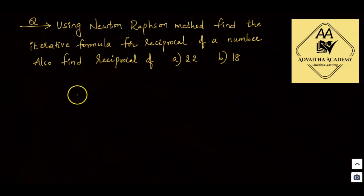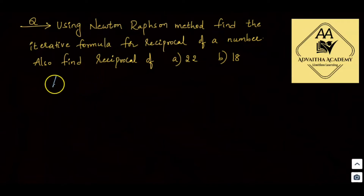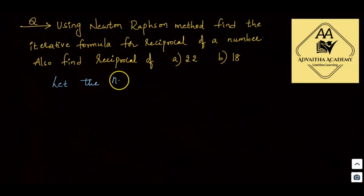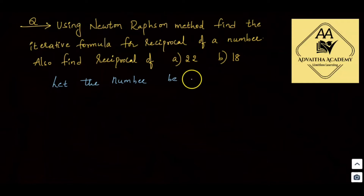First, we will derive the iterative formula. Let the number be n. We want to find the reciprocal of a number n.